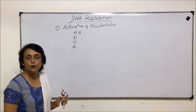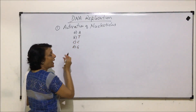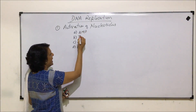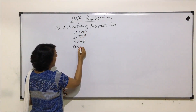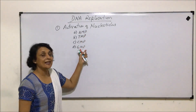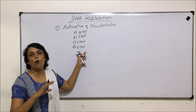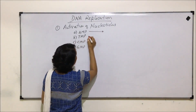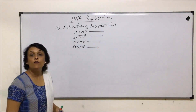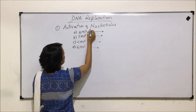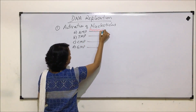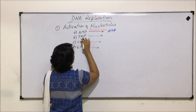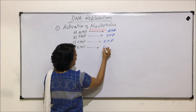These nucleotides contain four different nitrogen bases: A, T, C, and G. They have a pentose sugar, a nitrogen base, and one phosphate group, so they are monophosphates — written as AMP, TMP, CMP, and GMP. These are inactive nucleotides circulating in the nucleoplasm of eukaryotic cells and in the cytoplasm of prokaryotic cells. They are activated by the enzyme phosphorylase.